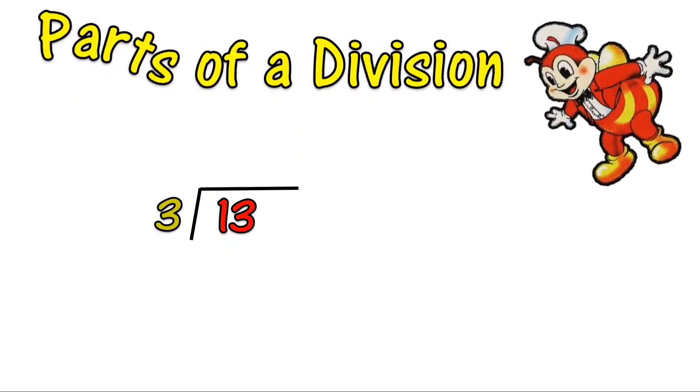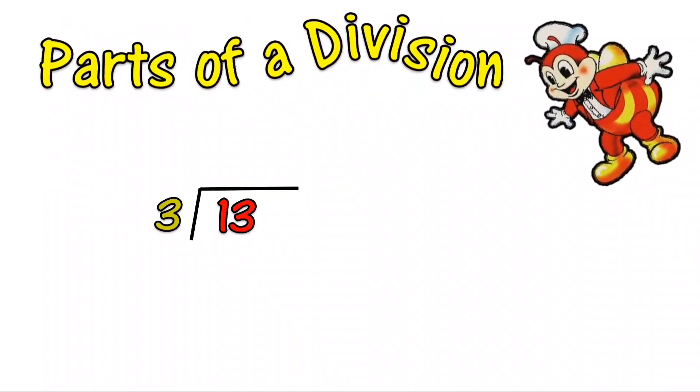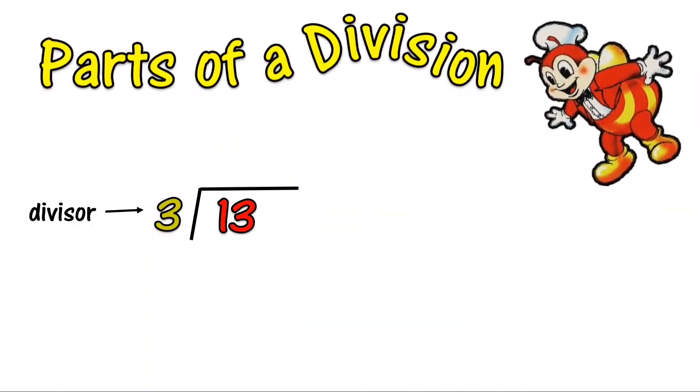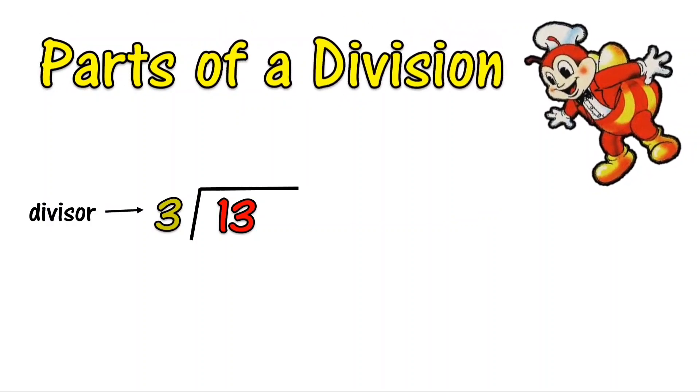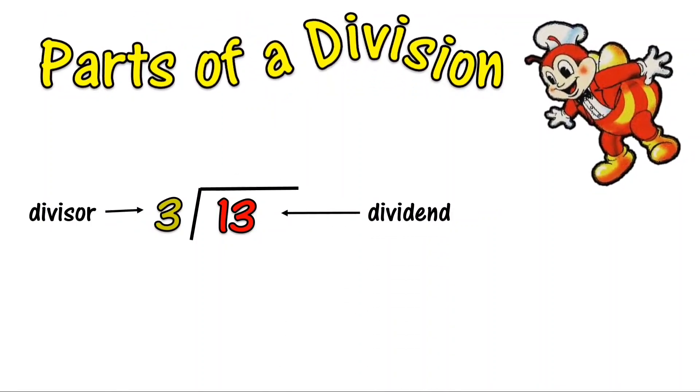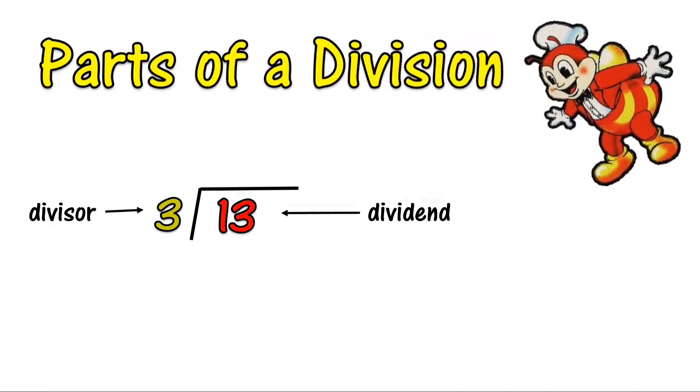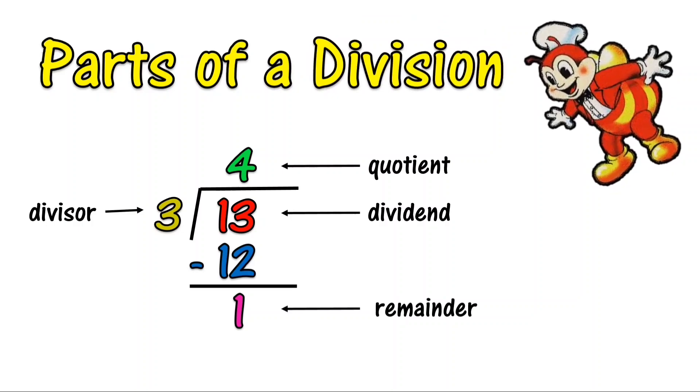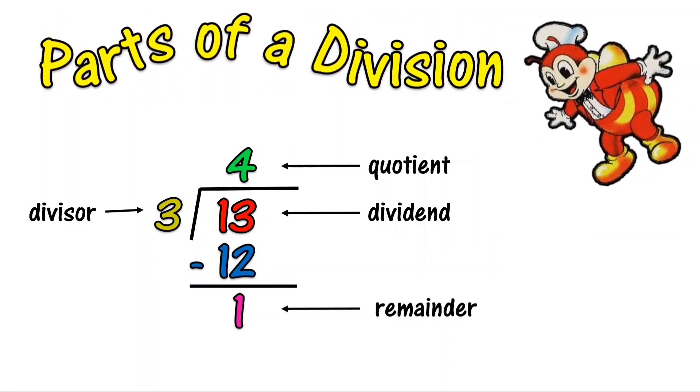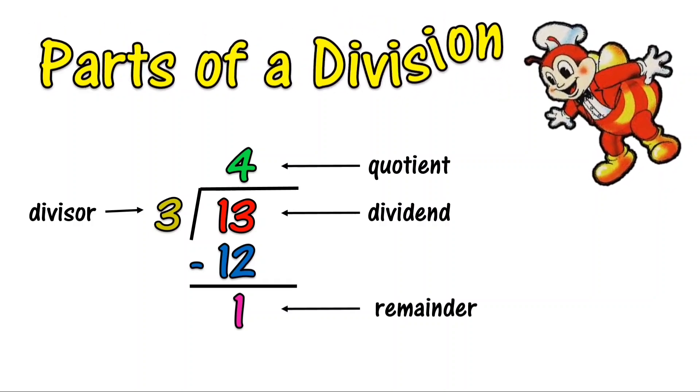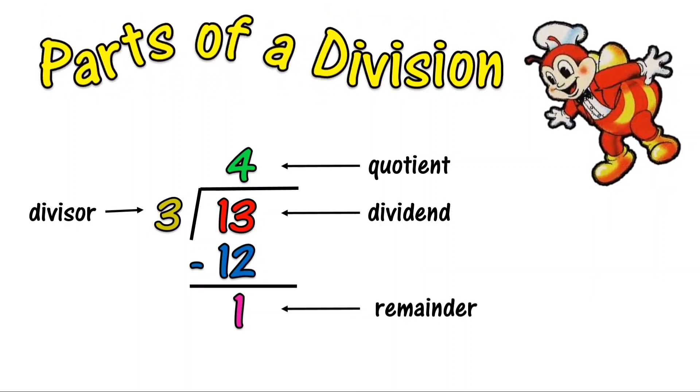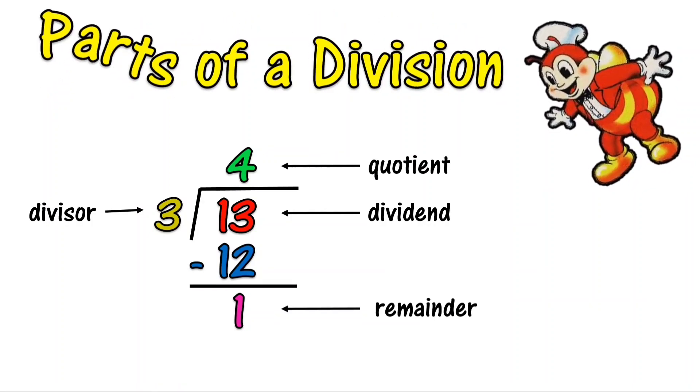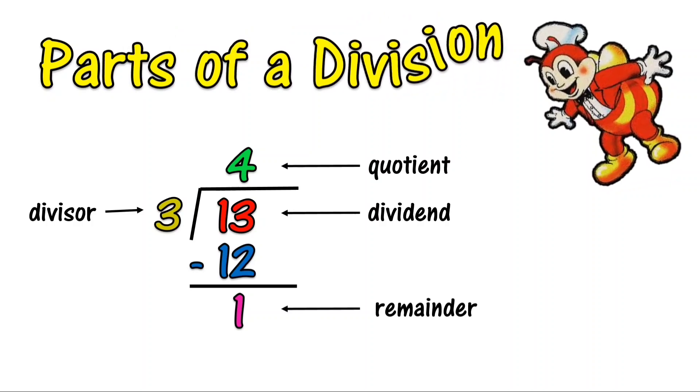Now let us identify the parts of division in this equation. In this equation, 3 is the divisor and 13 is the dividend. 13 divided by 3 equals 4. 4 times 3 equals 12. 13 minus 12 equals 1. 4 is the quotient and 1 is the remainder.